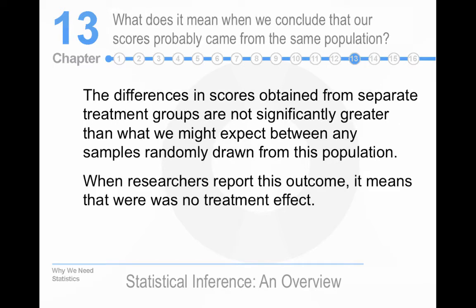The differences in scores, basically when the researchers report an outcome like that, it means that there was no treatment effect. So they're saying that the independent variable has no effect. This is what's predicted by the null hypothesis.